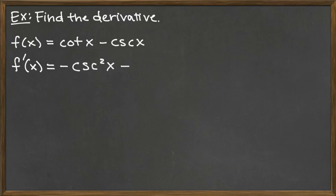Then we subtract the derivative of cosecant of x, which is negative cosecant of x times cotangent of x.